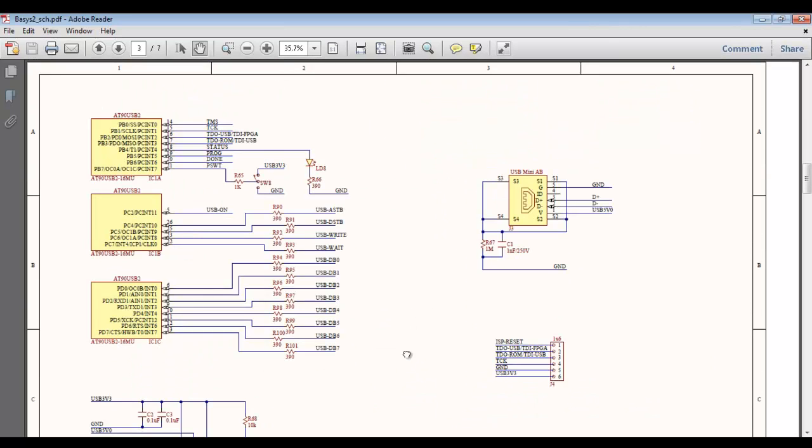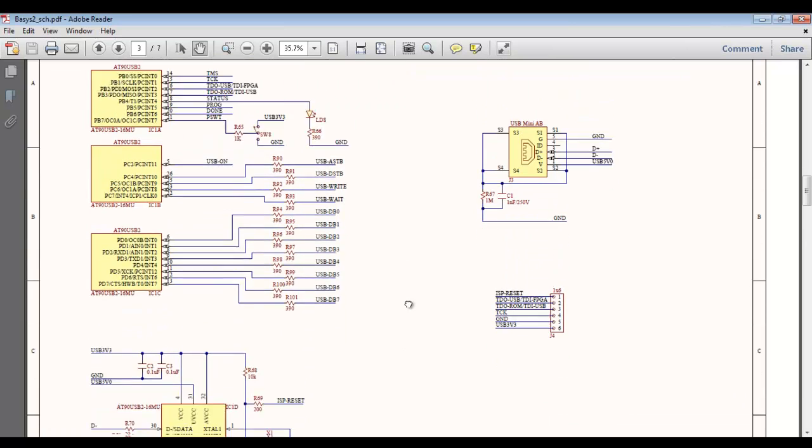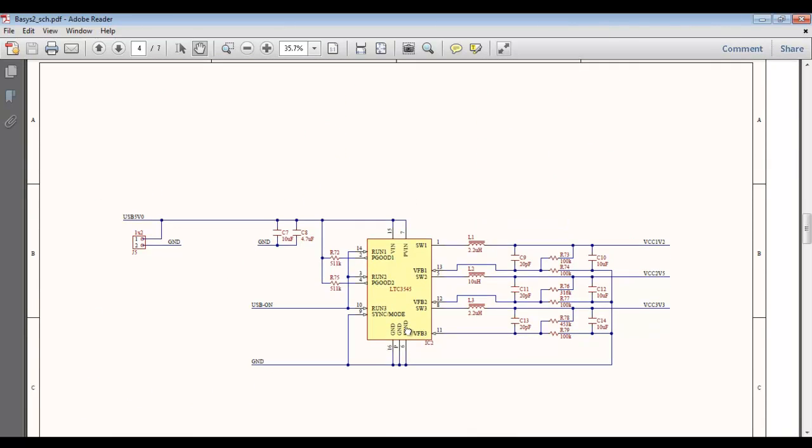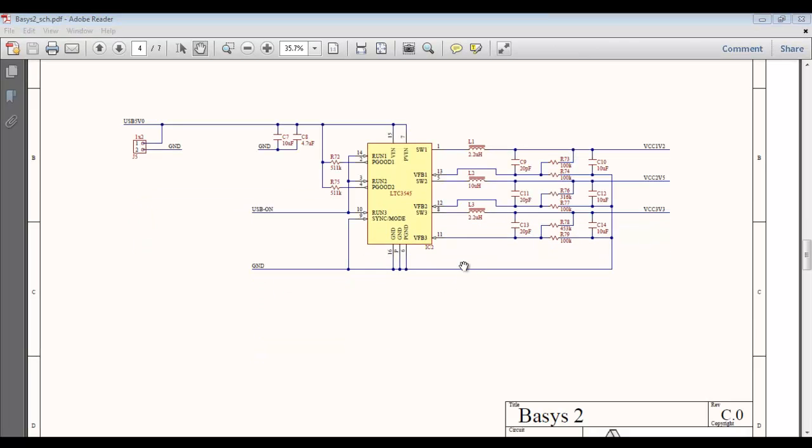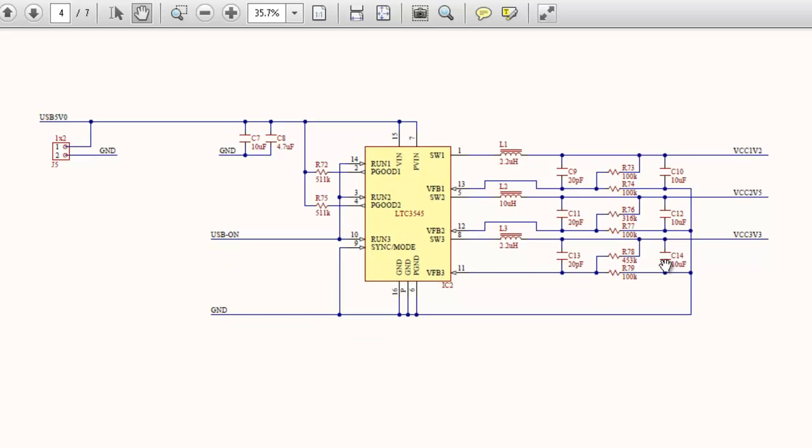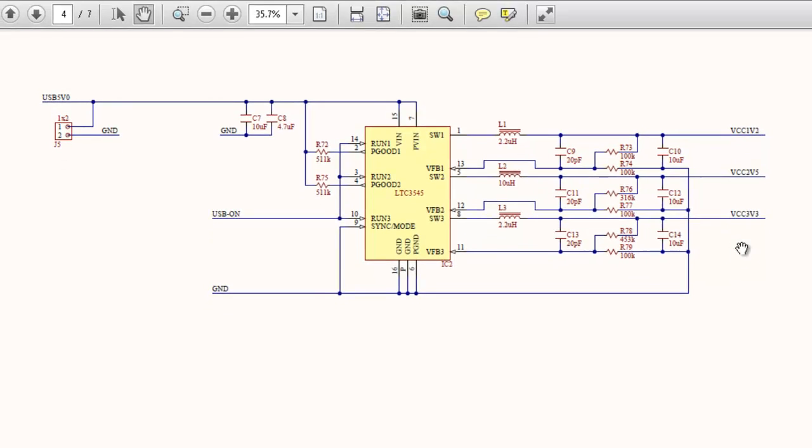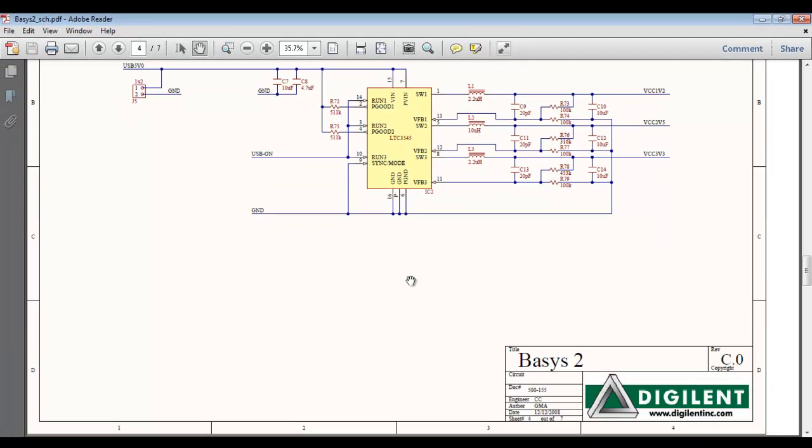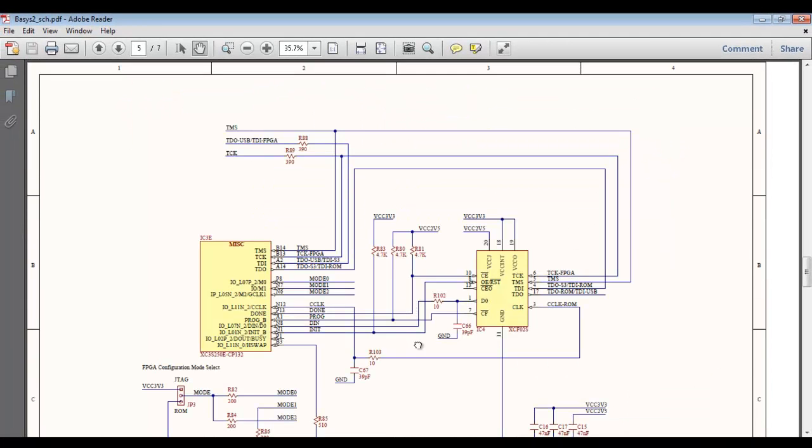This page shows the USB connection and the chip used here. The next page shows the voltage regulator chip. This chip provides three types of voltages: 1.2V, 2.5V, and 3.3V - very good design.